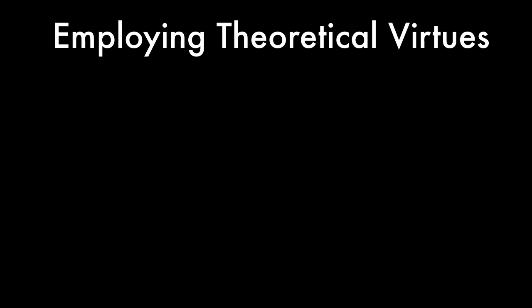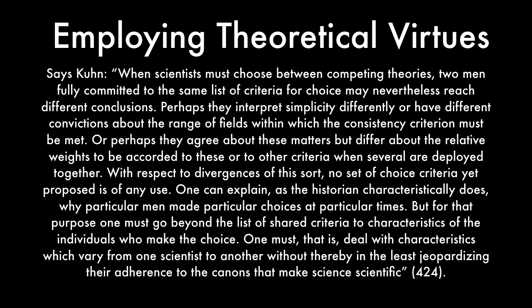What are the theoretical virtues used by scientists? Says Kuhn: when scientists must choose between competing theories, two people fully committed to the same list of criteria for theory choice may nevertheless reach different conclusions. Perhaps they interpret simplicity differently, or have different convictions about the range of fields within which the consistency criterion must be met. Or perhaps they agree about these matters but differ about the relative weights to be accorded to these or to other criteria when several are deployed together.